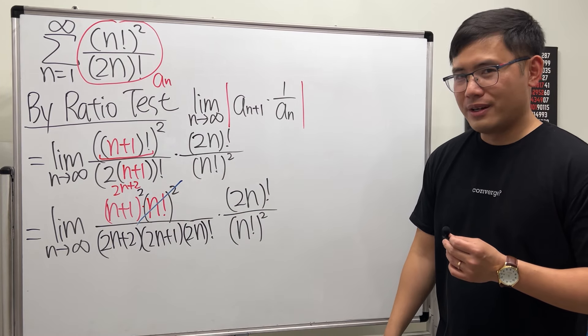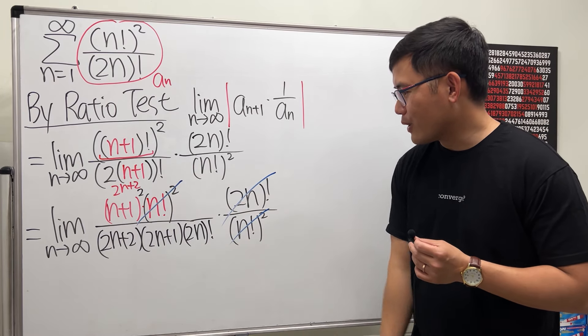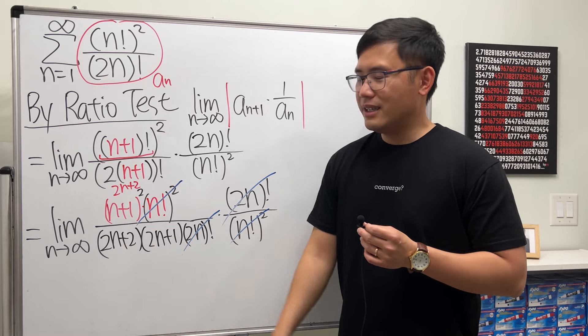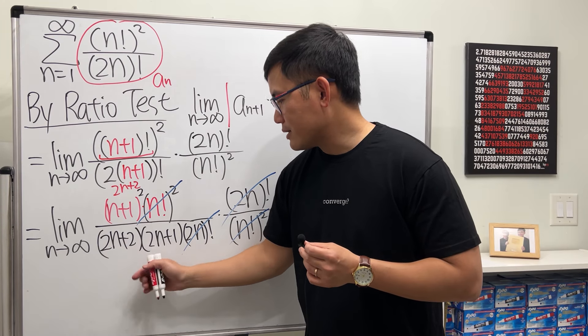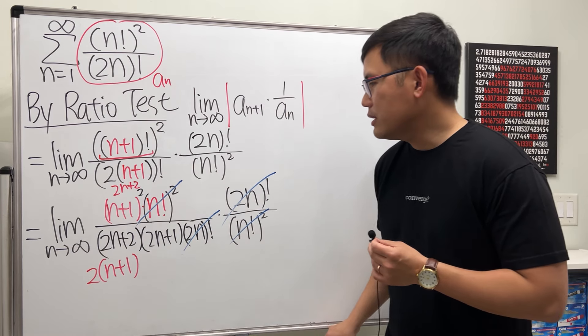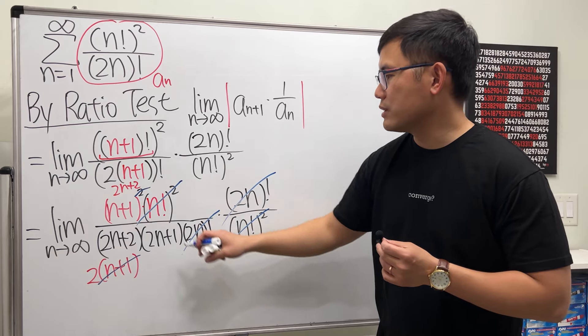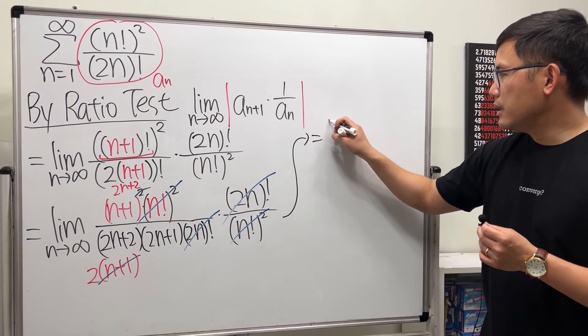(n!)² cancels out with (n!)². Moreover, 2n factorial cancels out with 2n factorial. So nice! Is there anything else? Yes, 2n+2—we can first factor out a 2, and notice n+1 can cancel with one of the (n+1). So we have just one here.